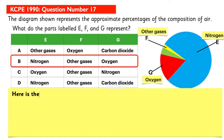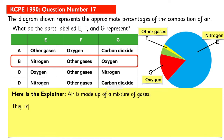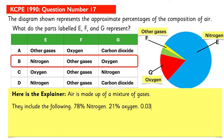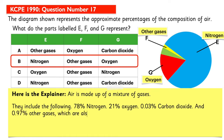Here is the explainer. Air is made up of a mixture of gases. They include the following: about 78% nitrogen, about 21% oxygen, about 0.03% carbon dioxide, and about 0.97% other gases, which are also called inert or rare gases.